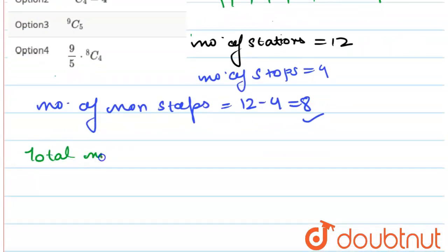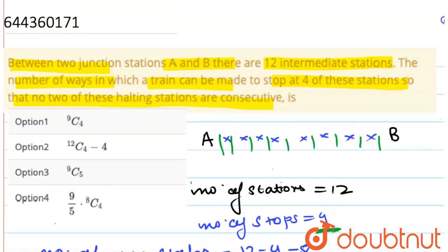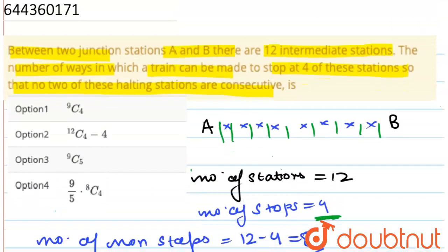So the total number of ways are 9 and the train is stopping at 4. So 9C4 is your answer. Let us see which of the following option it matches. So 9C4 is your option number 1, which is correct.